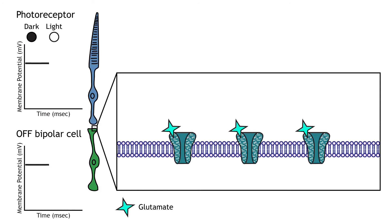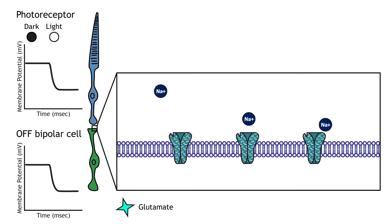Photoreceptors synapse onto bipolar cells in the retina. There are two types of bipolar cells: off and on. These cells respond in opposite ways to the glutamate released by the photoreceptors because they express different glutamate receptors. Like photoreceptors, the bipolar cells do not fire action potentials and only respond with graded postsynaptic potentials. In off-bipolar cells, the glutamate released by the photoreceptor is excitatory. Off-bipolar cells express ionotropic glutamate receptors. In the dark, glutamate activates the ionotropic receptors and sodium can flow into the cell, depolarizing the membrane potential. In the light, the absence of glutamate causes the ionotropic receptors to close, preventing sodium influx and hyperpolarizing the membrane potential.